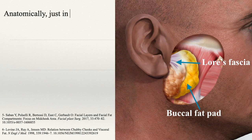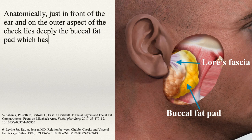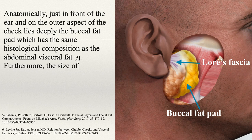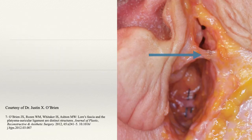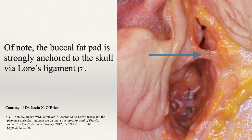Anatomically, just in front of the ear and on the outer aspect of the cheek lies deeply the buccal fat pad, which has the same histological composition as the abdominal visceral fat. Furthermore, the size of the buccal fat pad corresponds to the size of visceral fat, independent of body weight. Of note, the buccal fat pad is strongly anchored to the skull via Lohr's ligament.